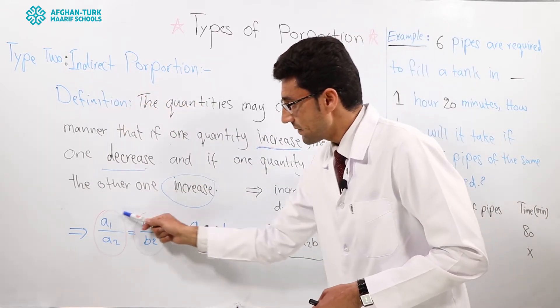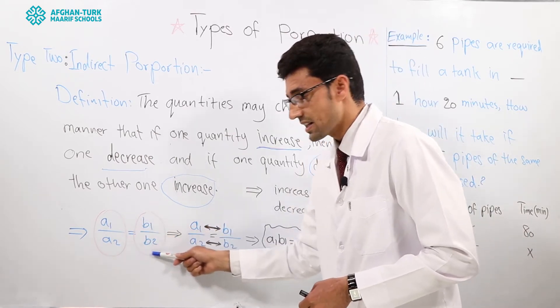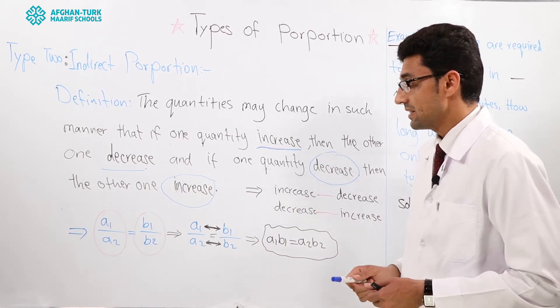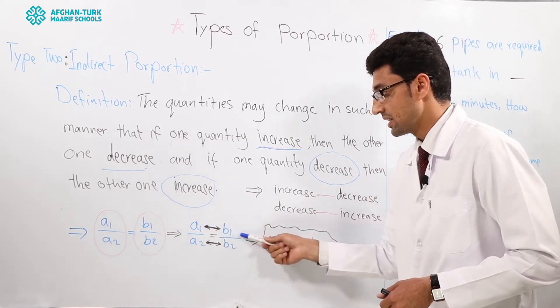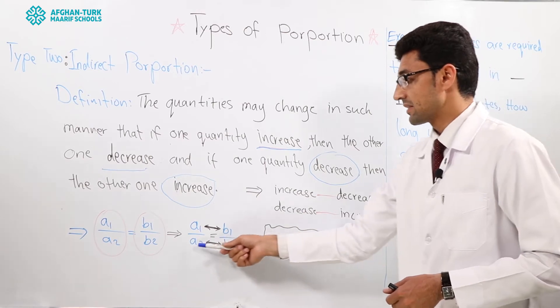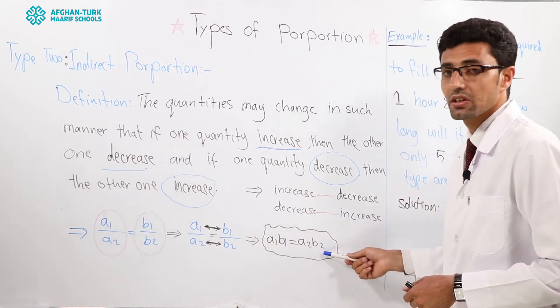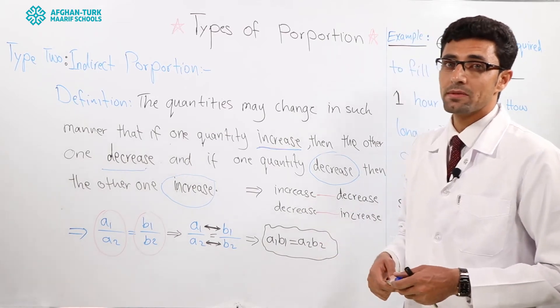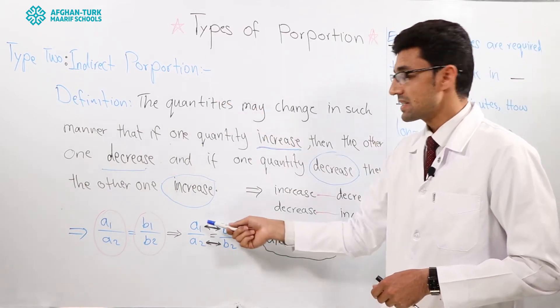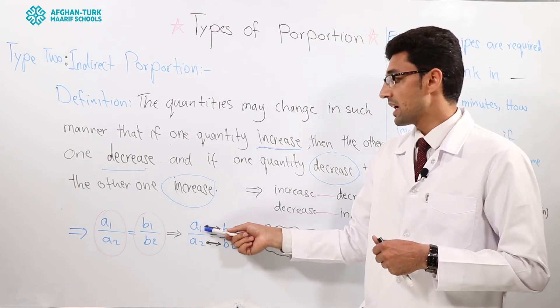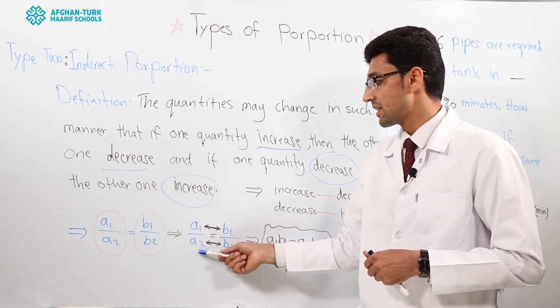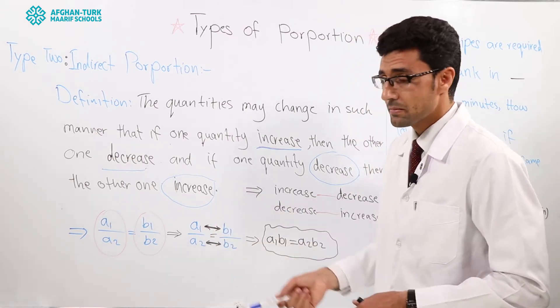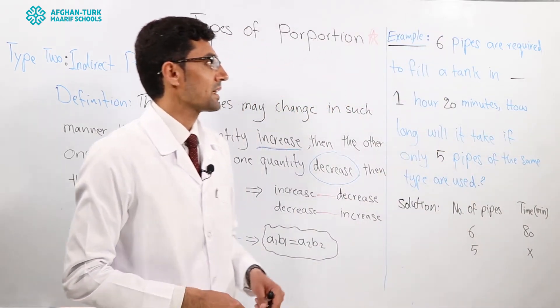If we write the indirect proportion as a proportion, then we can multiply numerators with each other and denominators with each other. In order to solve problems related to indirect proportion, just multiply numerators with each other and denominators with each other. In order to understand this concept, let's have an example.